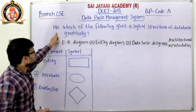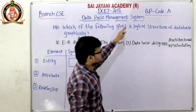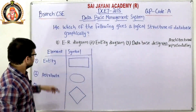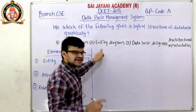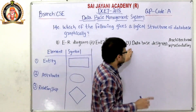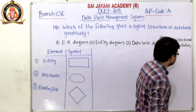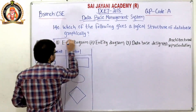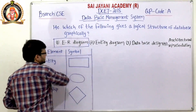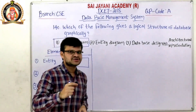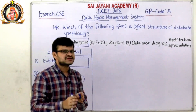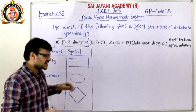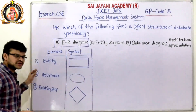Question number 140: Which of the following gives a logical structure of the database graphically? Options are: ER diagram, entity diagram, database design, and architectural representation. For question 140, the first option, ER diagram, is the right answer. The ER diagram describes the logical structure of the database with the help of a diagram. There are mainly three elements in an ER diagram: entity, attribute, and relationship.